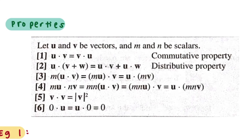Let's see property number two, the distributive property. If you have u dot (v plus w), it's the same as distributing it: u dot v plus u dot w.